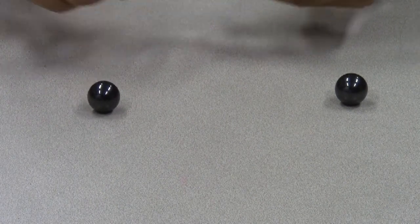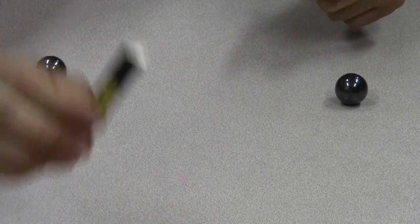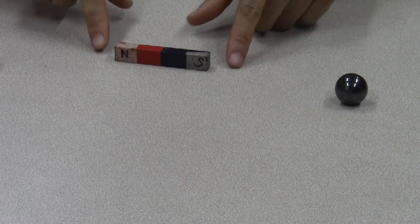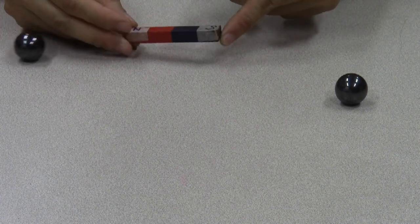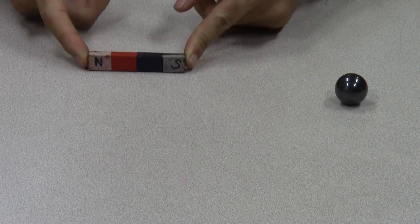With a normal bar magnet, quite often you have it labeled with the poles north and south. In this case, the north pole is the red end of this bar magnet and the south pole is the blue one. But when you have a ball magnet, how do you find where the poles are?